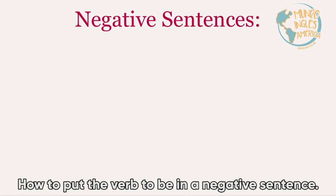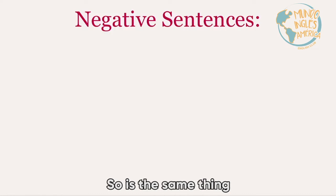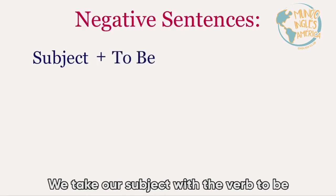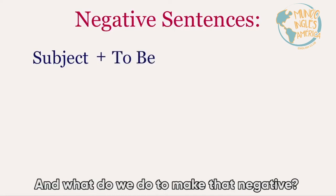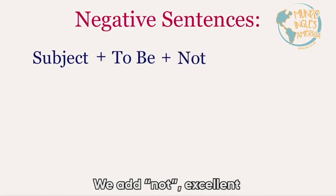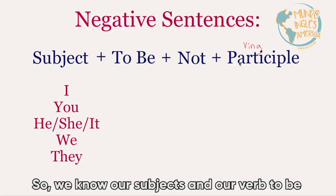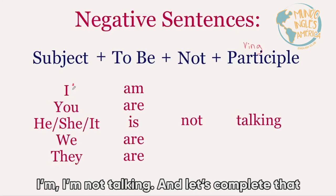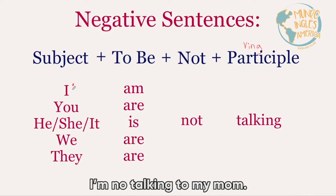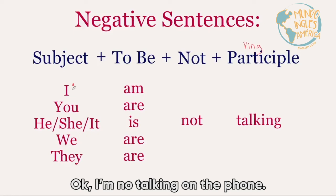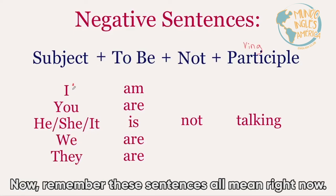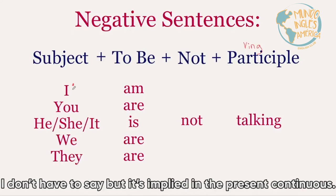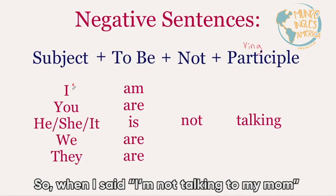For negative sentences, this is very simple because you already know how to put the verb 'to be' in a negative sentence. We take our subject with the verb 'to be' and add 'not'. So we have our subject, verb 'to be', 'not', and a participle. For example: 'I'm not talking' — let's complete that — 'I'm not talking to my mom' or 'I'm not talking on the phone.'